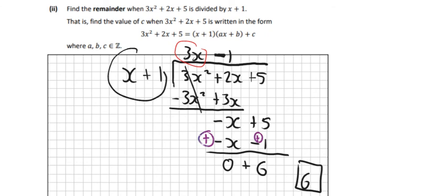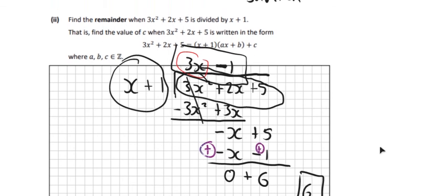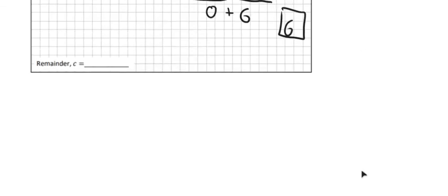So what we've kind of figured out is that x plus 1 goes into 3x squared plus 2x plus 5, this amount of times, 3x plus 1 times. And then when it does, the remainder then is 6, just positive 6. So that's what they asked us at the start, just to find the remainder. And then I think that's the last part then for part A.